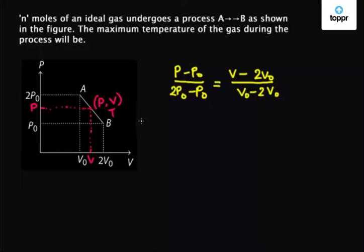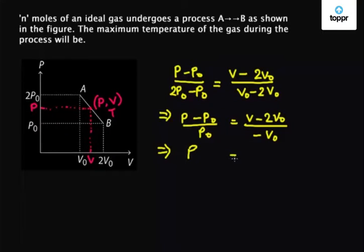So we rewrite it to get (P - P0) / P0 equals (V - 2V0) / (-V0). So on solving this equation we get P equals 3P0 - P0V / V0.